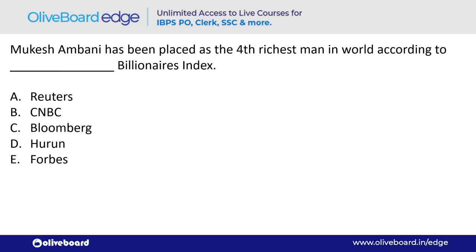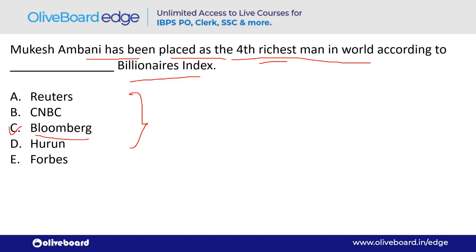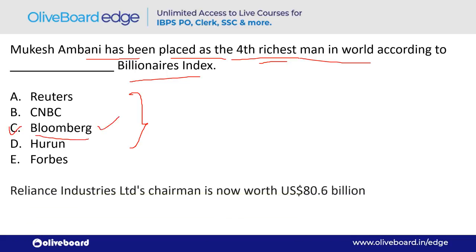Mukesh Ambani has been placed as the fourth richest man in the world according to which Billionaires Index? The answer is Bloomberg — option C. Mukesh Ambani's net worth is $80.6 billion USD. He is the chairman of Reliance Industries Limited.